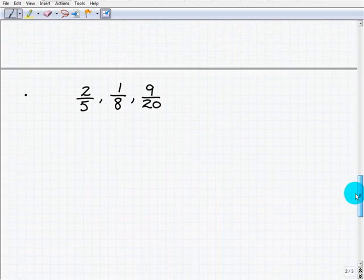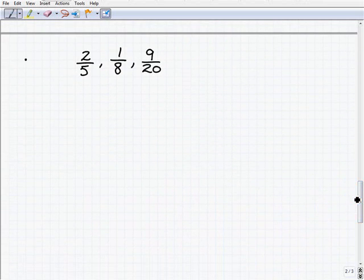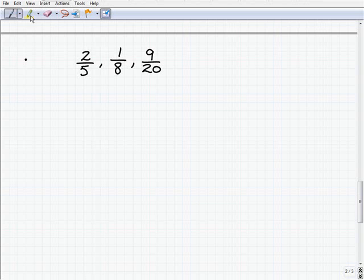So here we have, just as we're practicing with LCMs, here we have 3 fractions, but the procedure is still the same. What we need to do is prime factor each one of these denominators, okay, to find the LCMs. So let's go ahead and do that. We have 5, 8, and 20. So go ahead and prime factor each.